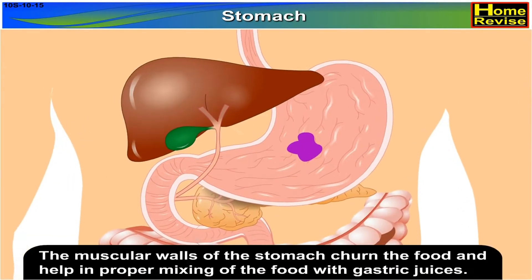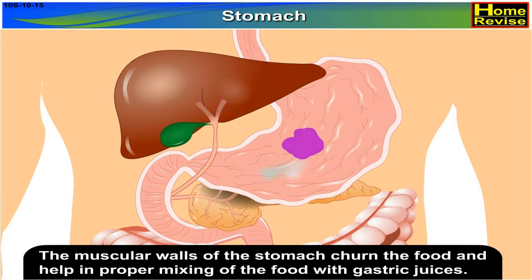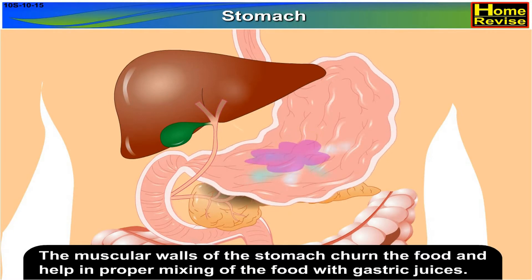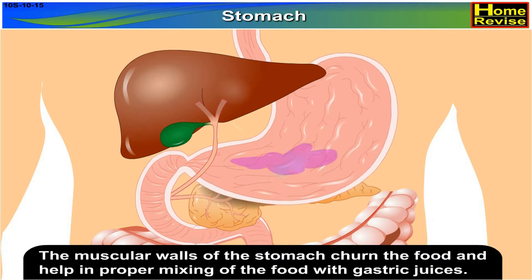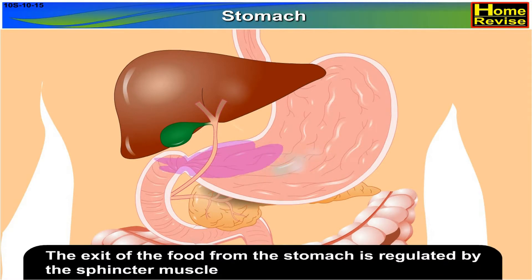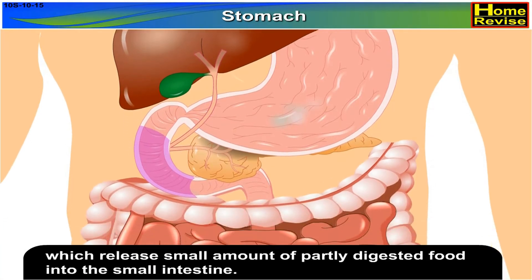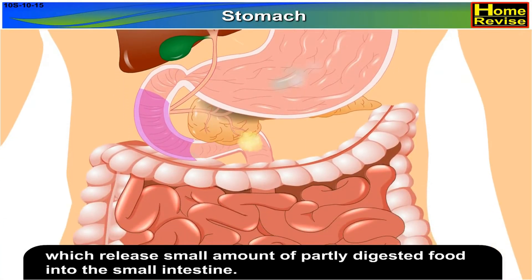The muscular walls of the stomach churn the food and help in proper mixing of the food with gastric juices. The exit of the food from the stomach is regulated by the sphincter muscle, which releases small amounts of partly digested food into the small intestine.